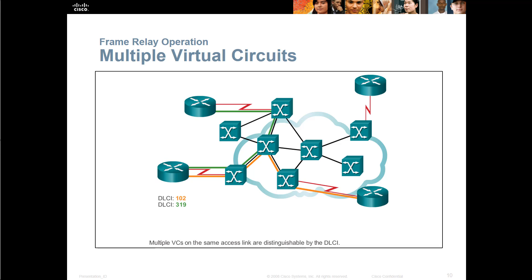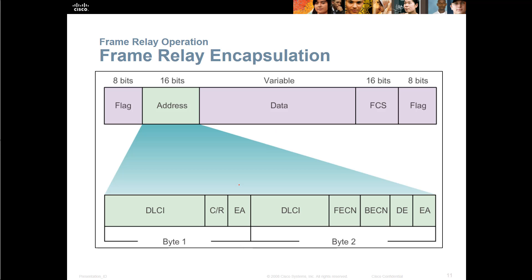Let's look at a multi-circuit connection. Here we have orange for DLCI 102 and a green pathway through the cloud — those are multiple virtual circuits connecting to one router. Multiple virtual connections on the same access link are distinguishable by the DLCI number. Here we have the frame relay frame structure: a flag, a 16-bit address portion, variable-length data, the frame check sequence, and ending flags. Looking at our 16 bits — our 2 bytes — we have our DLCI source and destination fields and the appropriate subcategories.